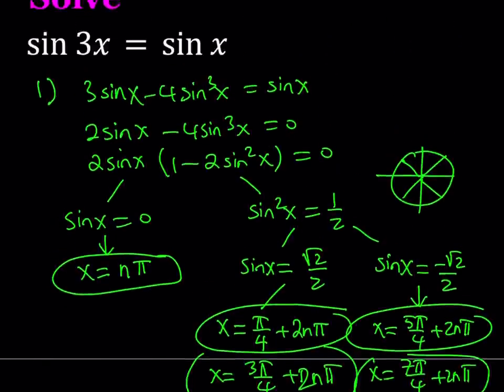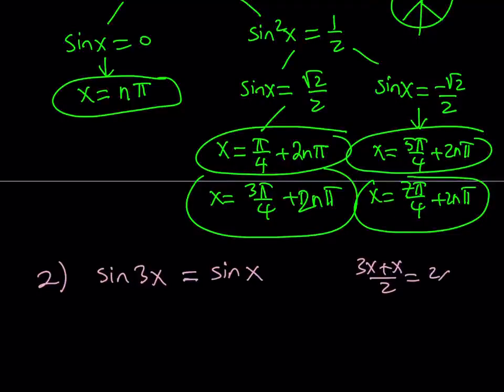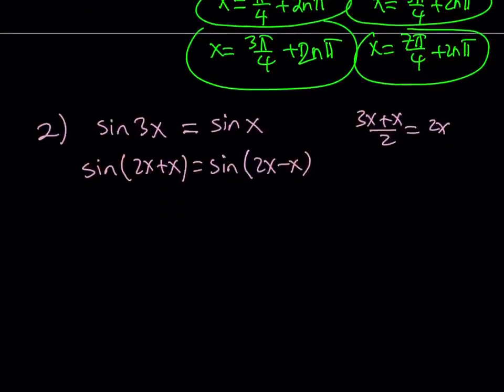The second method involves writing this as a sum and difference. The average of 3x and x is 2x, therefore, I can write this as sine of 2x plus x, and sine of 2x minus x. This is a really good strategy that we use with sum to product formulas, and now I can expand it.